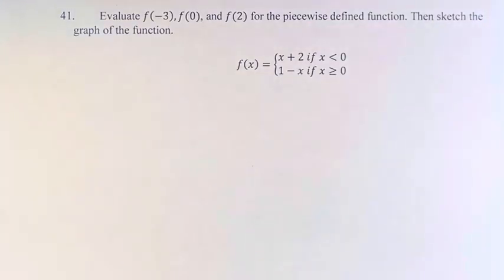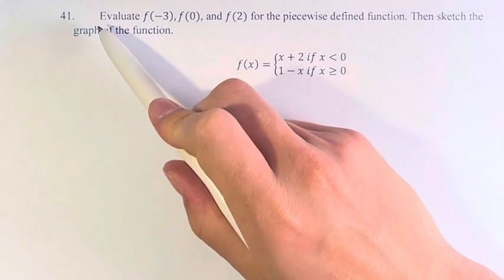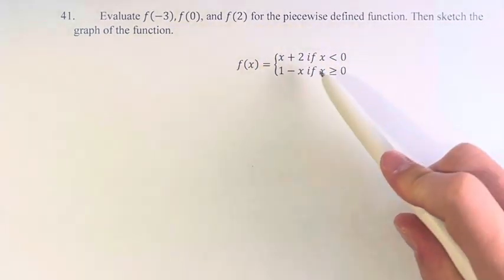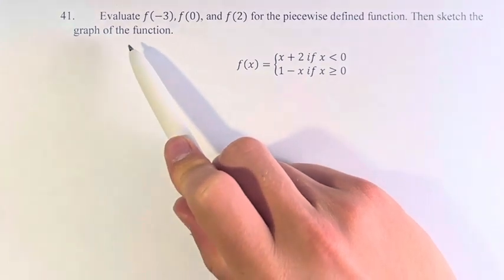Hello, and welcome back to another video. In this problem, we're looking to evaluate f of negative 3, f of 0, and f of 2 for the piecewise function, and to sketch the graph of the function.